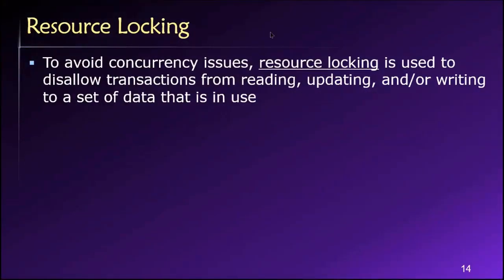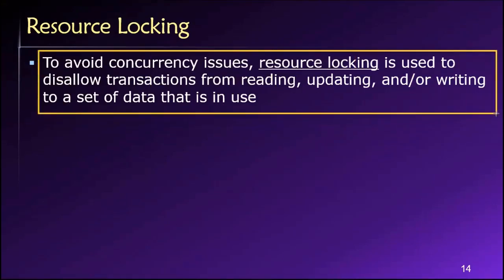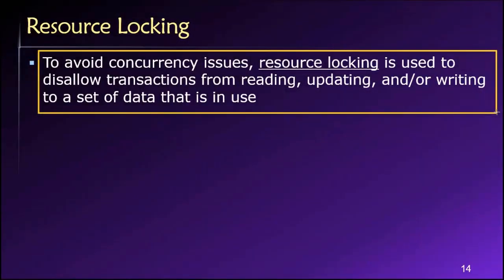The primary mechanism that we use to prevent concurrency control problems is something called locking — resource locking. The big idea with resource locking is that we are going to request, or be granted by the database, exclusive access to certain data in the database for a certain period of time — typically while we are busy working on our transaction.